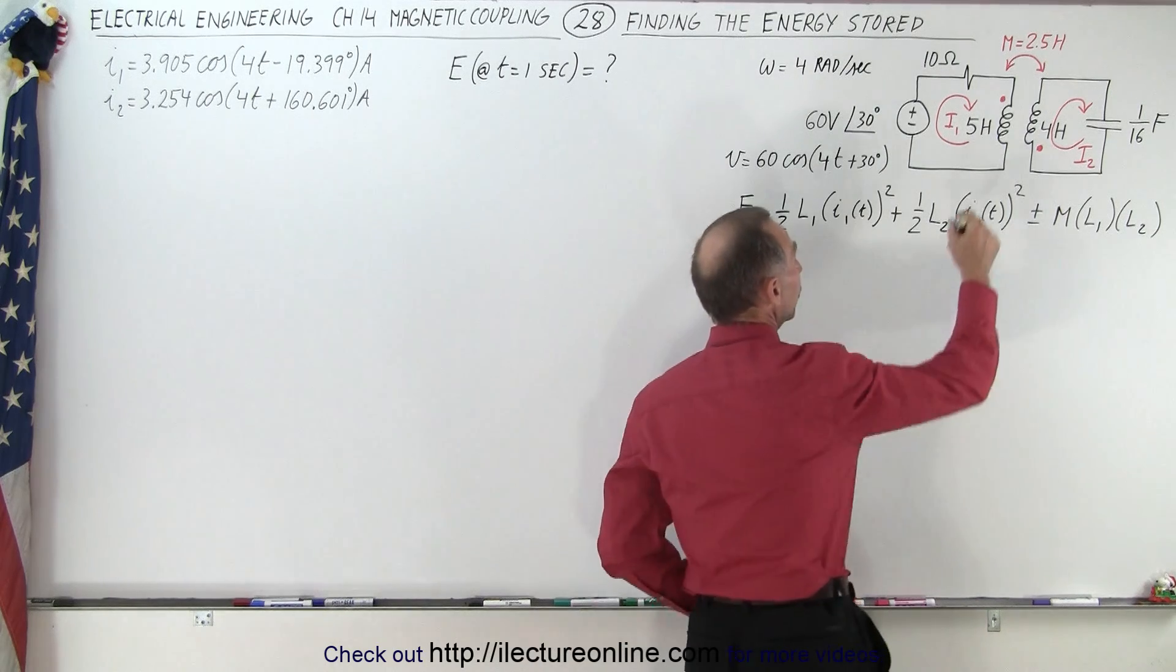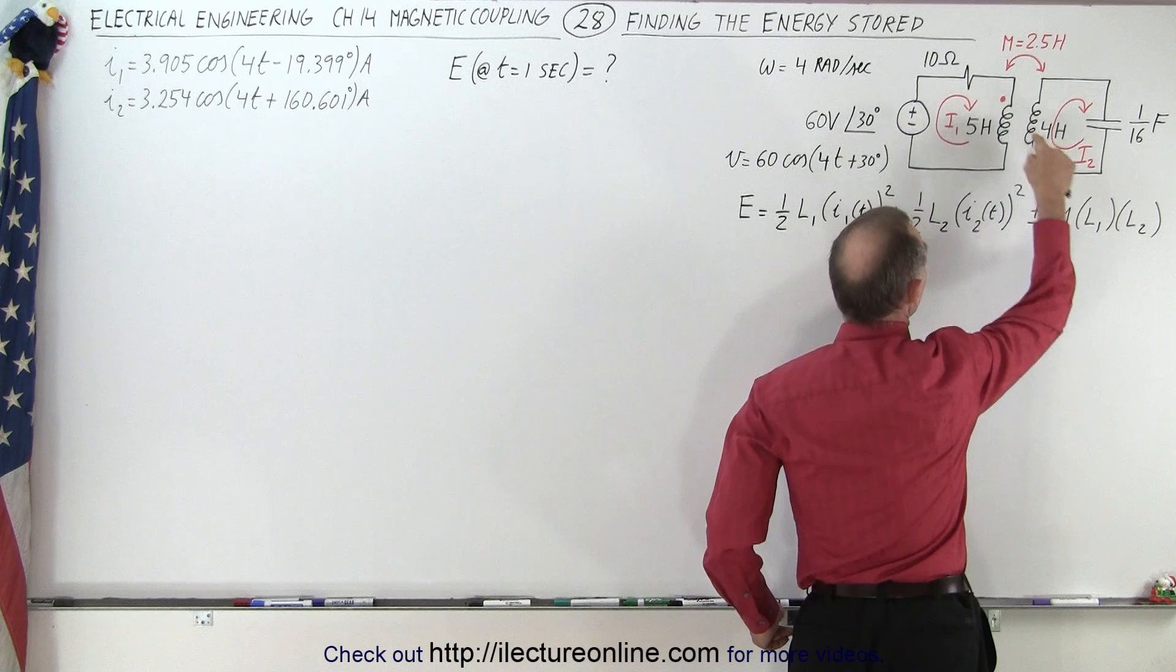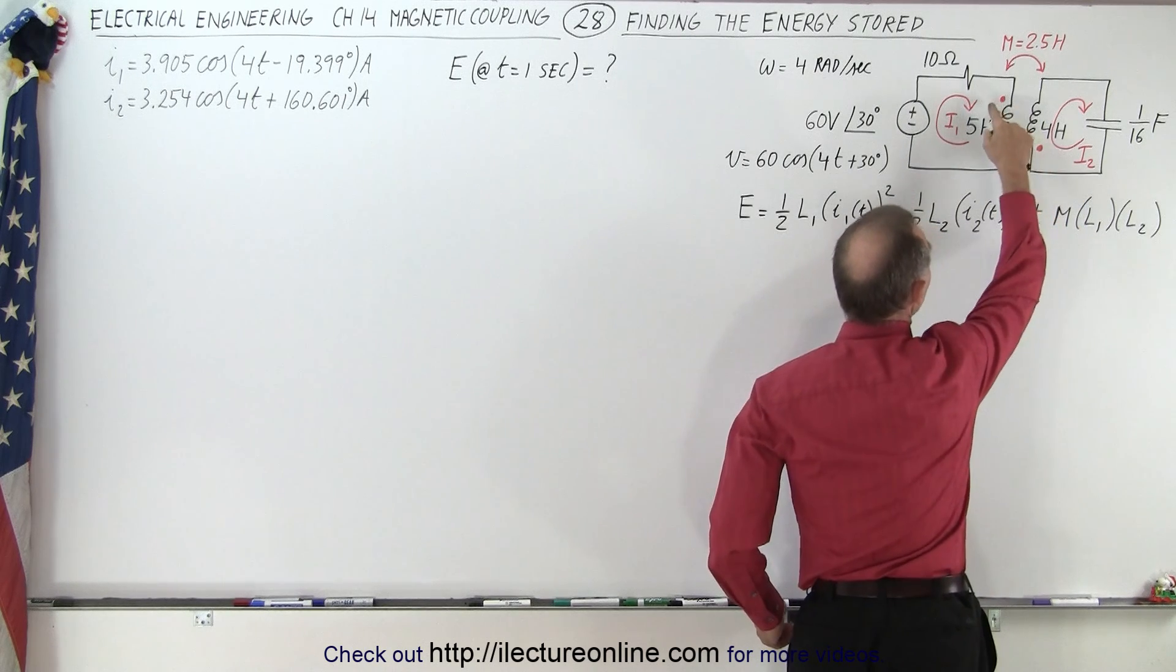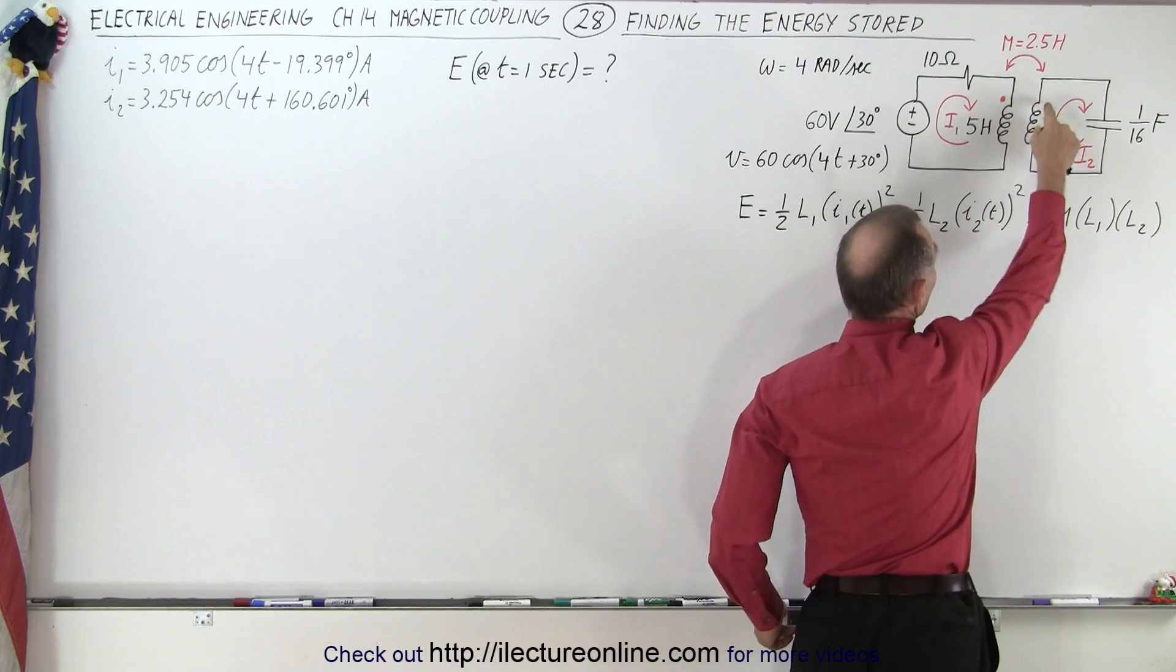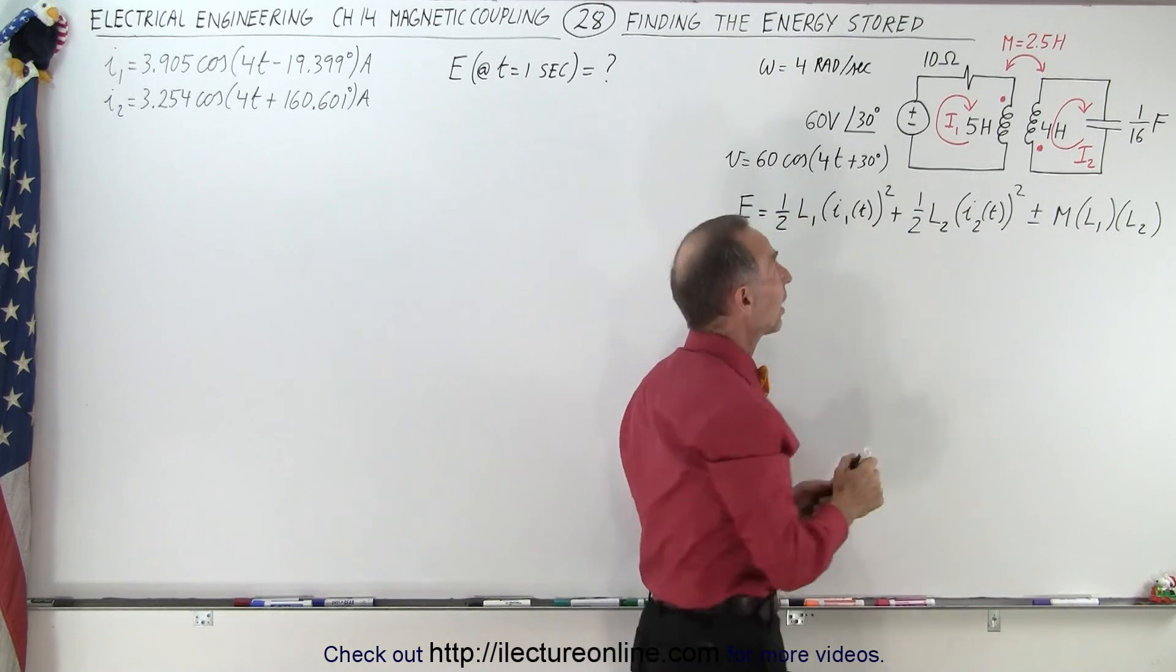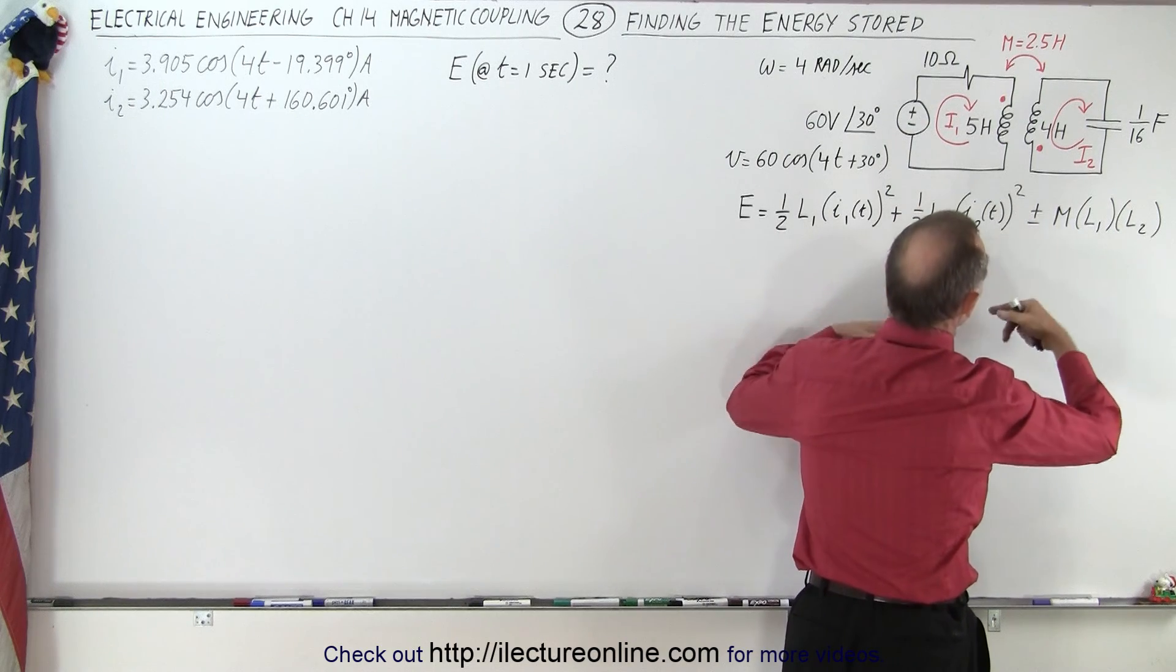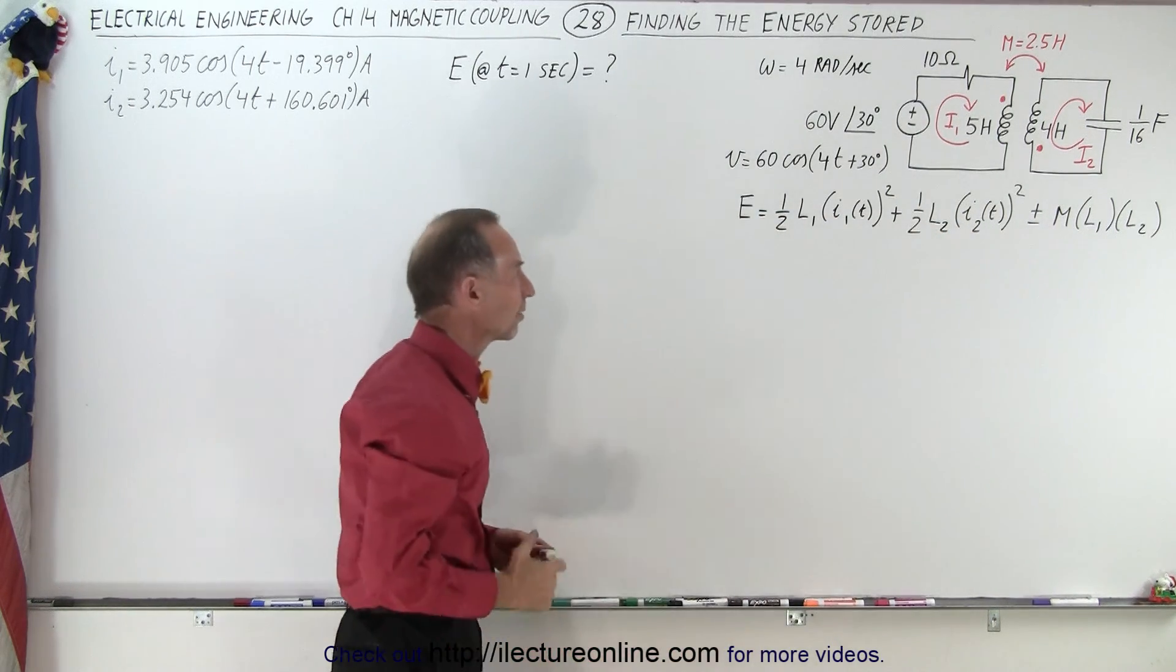Notice that if the current enters the inductor at the dot for both inductors, then it becomes plus. If one enters on one side and the other one enters on the non-dot of the inductor, then we end up with a minus. In this case, since both currents entered the inductor on the dot side, we have a positive sign there.